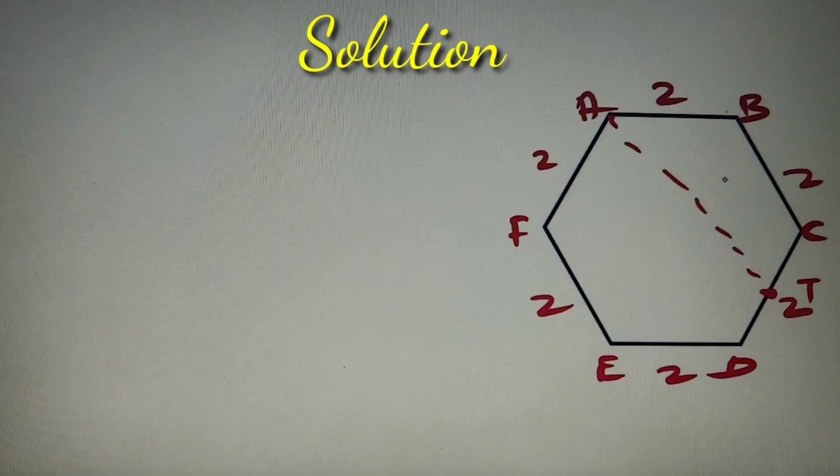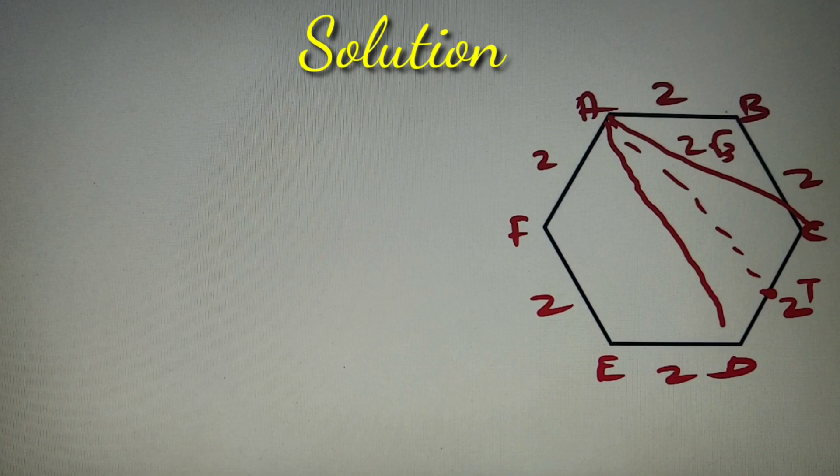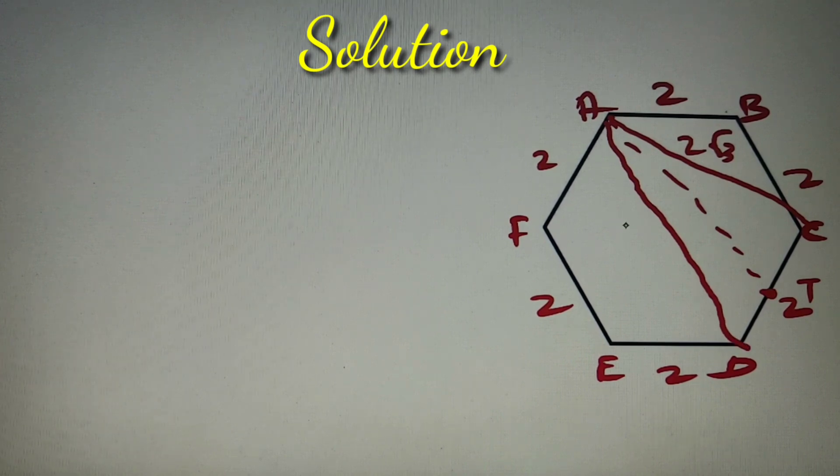Now we know the distance AC is equal to root 3a where a is the side of the hexagon. So this distance is equal to 2 root 3. We know the distance AD is equal to 2a. So a is equal to 2, so AD is equal to 4, and we know the distance CD.